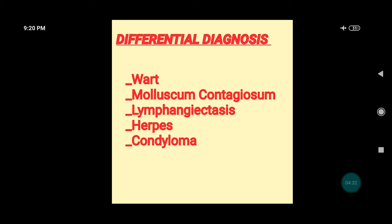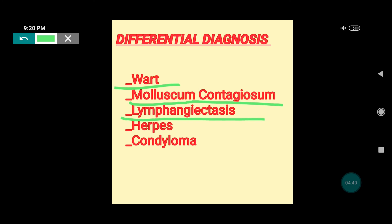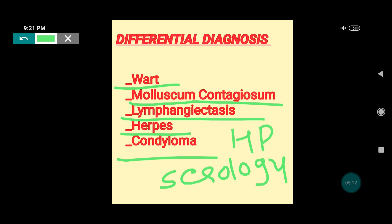The differential diagnoses that can mimic lymphangioma circumscriptum include: verruca vulgaris (when the vesicle ruptures), molluscum contagiosum, lymphangiectasis (dilated lymphatic channels only), herpes (fluid-filled blisters can look similar), and condyloma acuminatum. Serological tests and histopathology can be done for confirmation of the specific disorder.